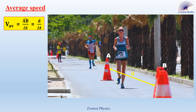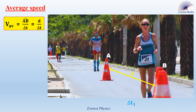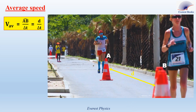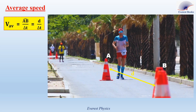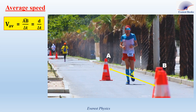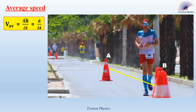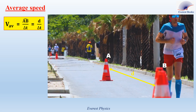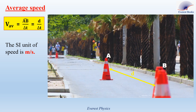Player 21 travels the distance between A and B in a time interval equal to delta T1, whereas player 30 travels the same distance in a longer time equal to delta T2. So, the average speed of player 21 is greater than that of player 30. The SI unit of speed is meters per second, and one meter per second is equal to 3.6 kilometers per hour.